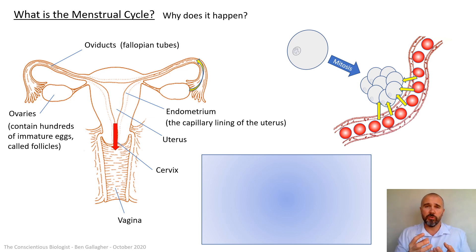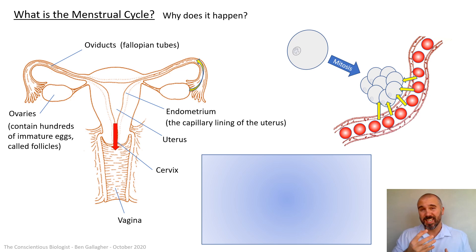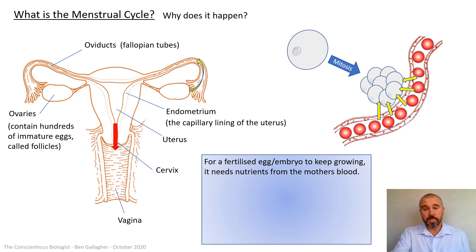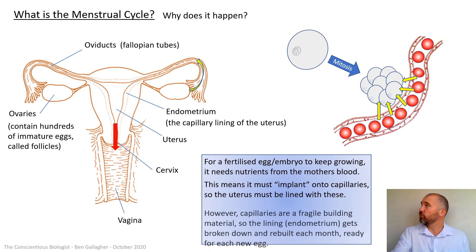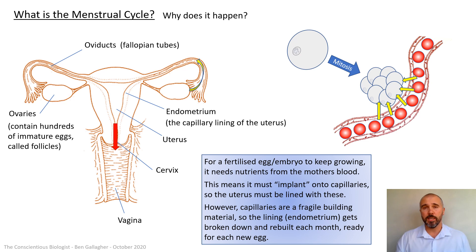If that egg hasn't been fertilized and isn't going to grow into a baby, they break down that lining and build a new one for the following month, and so on. So the purpose really is to keep a fresh, useful capillary lining to the uterus that can be there to feed an embryo should one be fertilized and start to grow. To summarize: a fertilized egg or embryo needs nutrients from the mother's blood, so it must implant onto capillaries, so the uterus must be lined with them. However, capillaries are fragile, so the endometrium gets broken down and rebuilt each month — once a month, one egg gets released, and each one gets a new lining.